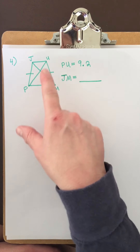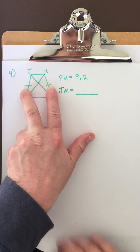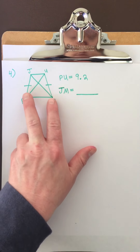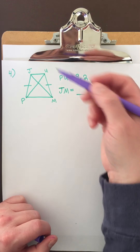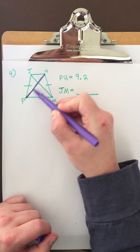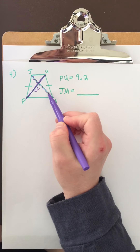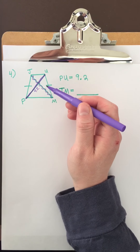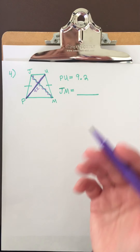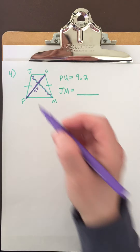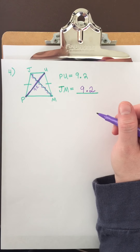We have trapezoid JUMP, which is an isosceles trapezoid because its two legs are congruent. They're asking what JM is, and they tell us PU is 9.2. Since this is an isosceles trapezoid, the diagonals are congruent and their measures are equal — so if PU is 9.2, then the other diagonal JM must also measure 9.2 units.